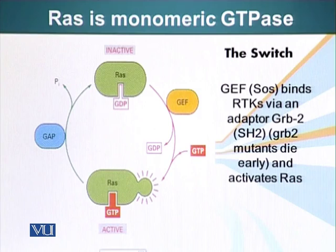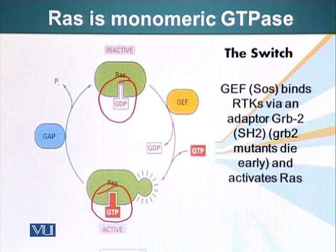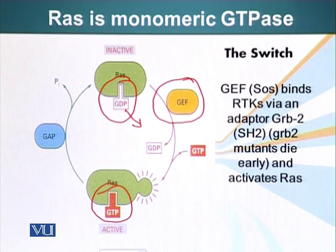RAS is a switch with two positions: on and off. When bound to GTP it is in the on state; when bound to GDP it is in the off state. Unlike G protein, which can exchange GDP for GTP largely on its own, RAS is a smaller protein and needs additional help. That help comes from GEF — guanine nucleotide exchange factor — which allows RAS to release GDP. Because GTP concentration is greater in the cell, RAS will then bind a GTP molecule and become active.